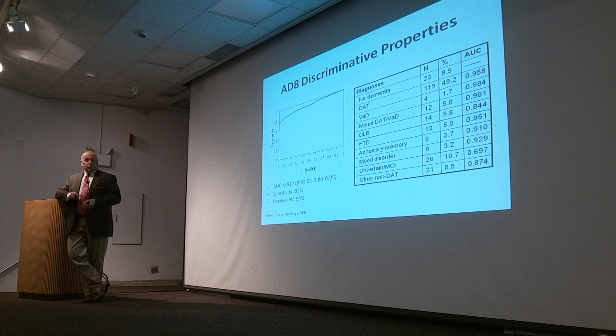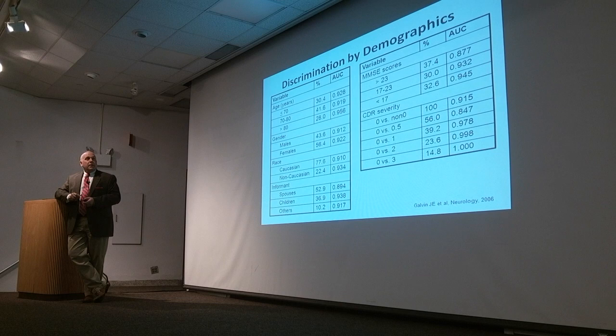In real-world practice, we're able to discriminate about 92% of individuals. It works well regardless of the cause of dementia — Alzheimer's, vascular, Lewy body, frontotemporal, et cetera. It doesn't matter what your characteristics are: it works equally well by age, by gender, by race, by type of performance, by mini-mental scores, or by CDR. It performs really quite well.